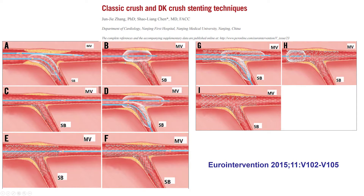The DK crush technique, described in more detail in another video, has several steps. The key concepts are: place a stent into the side branch with a balloon in the main vessel ready to crush the stent; deploy the side branch stent, remove the side branch balloon, and use the main vessel balloon to crush the deployed side branch stent. Next, rewire ideally through the proximal strut into the side branch and perform the first kissing balloon inflation. Then deploy a stent over the main vessel sized for the distal vessel, perform proximal optimization, rewire the side branch, perform the second kissing balloon inflation, followed by a final POT for a nice final result.